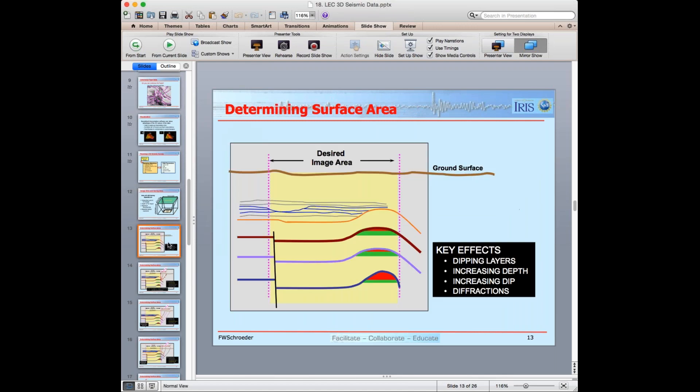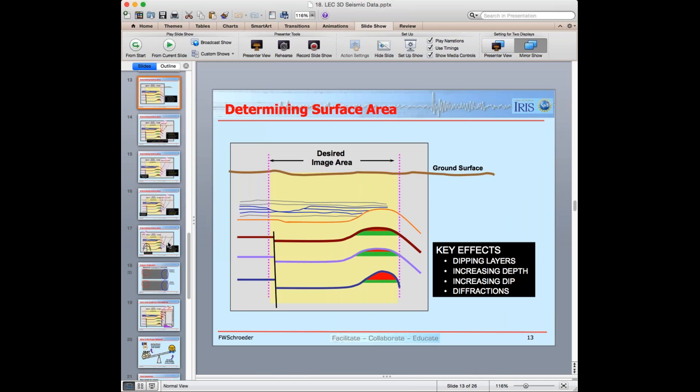The next slide, determining surface area. This is a cross-section. In yellow is the desired image area. I have some stratigraphy, and there's a fault on the left side of the image area. Some of the things we have to worry about is in the box with black with white letters, dipping layers, increasing depth, increasing dip, and diffractions. So we'll look at these four in the next couple of slides.